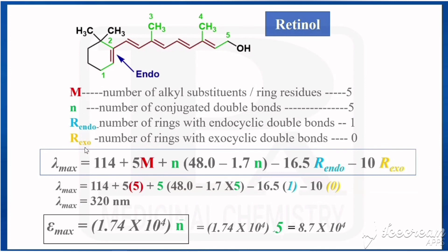By substituting these four values into the equation, we get lambda max = 320 nanometers for retinol. For epsilon max, using εmax = 1.74 × 10^4 × n with n = 5, we get εmax = 8.7 × 10^4 for retinol.